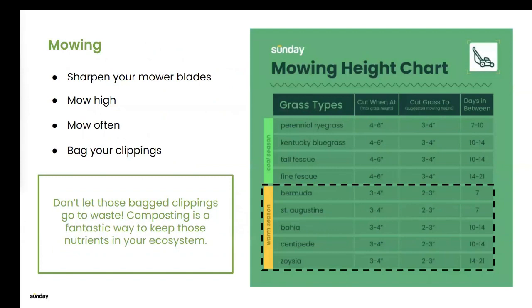Talking about mowing — something that's really important that a lot of people forget at the beginning of the growing season is sharpening your mower blades. Why is this important? If you have dull blades, you will damage the grass blade when mowing, which causes the grass not to recover as quickly from the cut and leaves space for disease issues, stopping it from growing to its full potential.